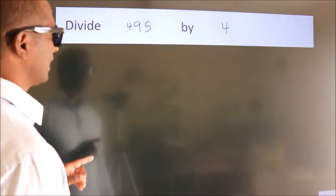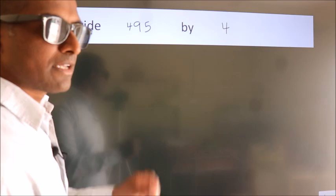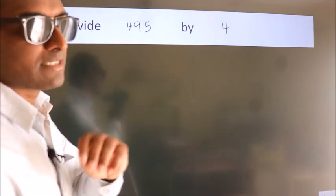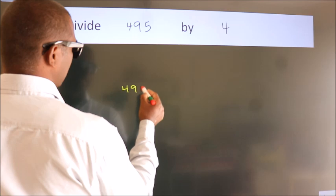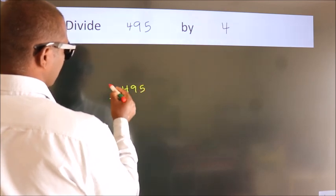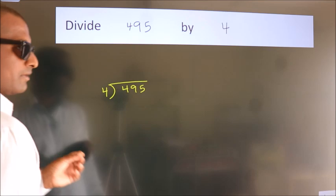Divide 495 by 4. To do this division, we should frame it in this way: 495 here, 4 here. This is your step 1.